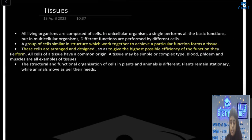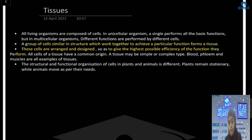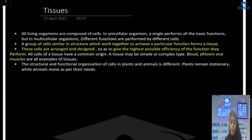All these tissues have cells with a common origin, and tissues can be simple or complex. Blood, muscles — these are all examples of tissues.